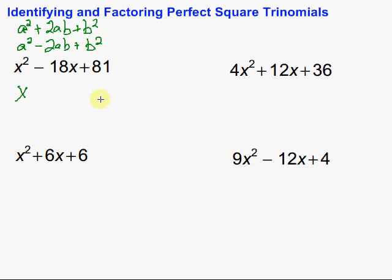Then I look at the last term. Is that a perfect square? Well, is there something that we can multiply by itself to get 81? Yes, there is, 9.